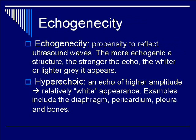Practically speaking, a more echogenic image will appear white or a lighter shade of gray. When a structure is termed hyperechoic, it means the echo has higher amplitude relative to surrounding structures — the appearance will be white. Examples of hyperechoic structures include the diaphragm, pericardium, pleura, and bones.